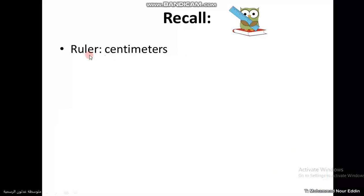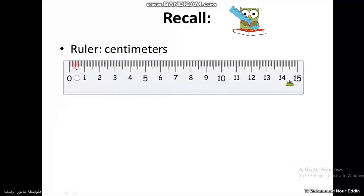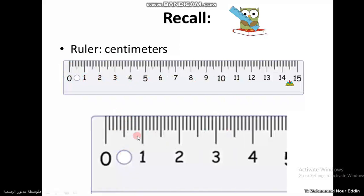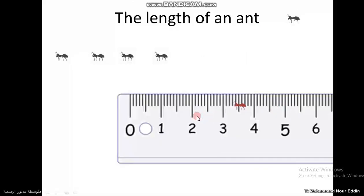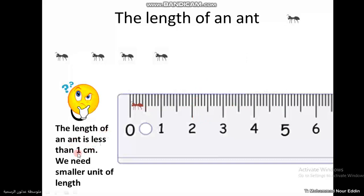Let me remember: the ruler is marked with centimeters. We see it in front of us — zero, one, two, three, four — these are centimeters. Two centimeters, three centimeters, four centimeters. The length of an ant is less than one centimeter, so we need a smaller unit of length.